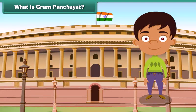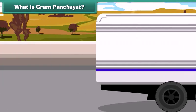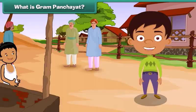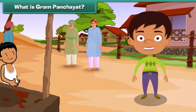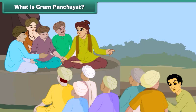We all know that governments in the states and Union territories maintain law and order in their cities and look after the needs of their city dwellers. The question is: who is responsible for keeping law and order in villages and meeting the requirements of villagers? The answer is the village local government, known as the village panchayat or gram panchayat.